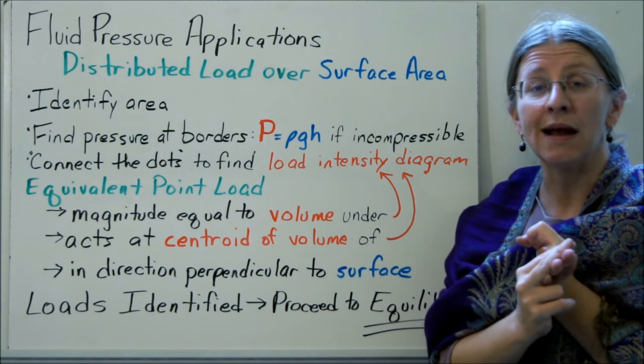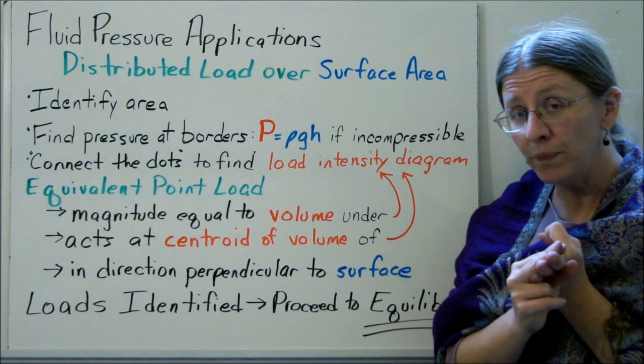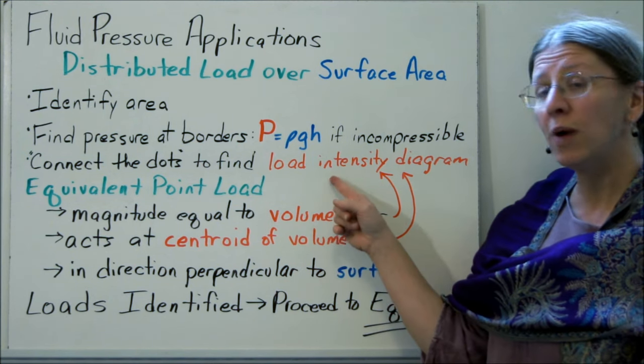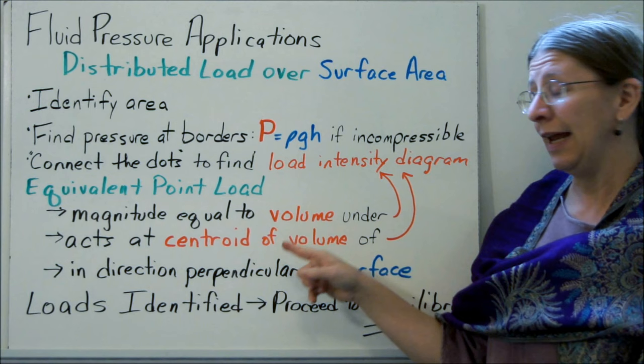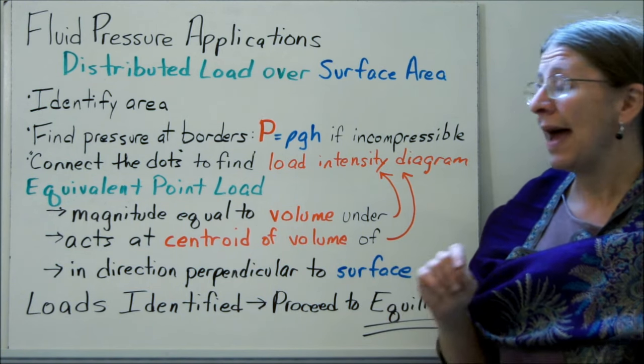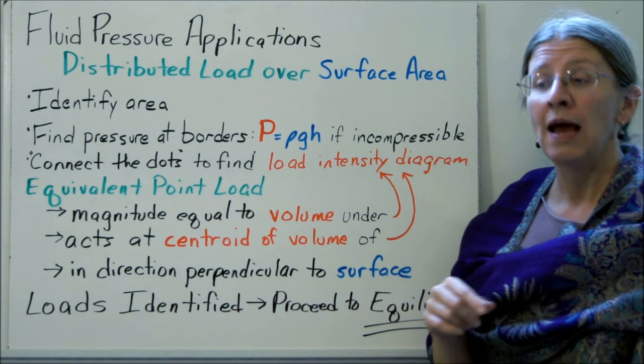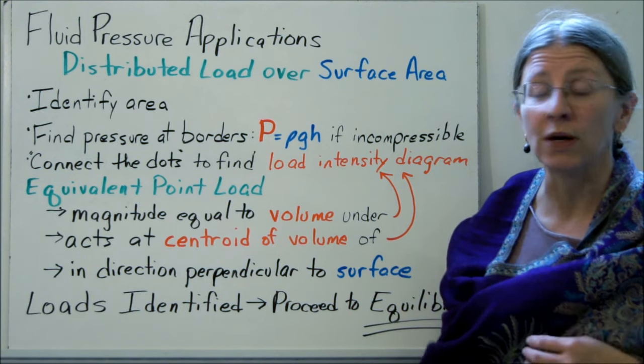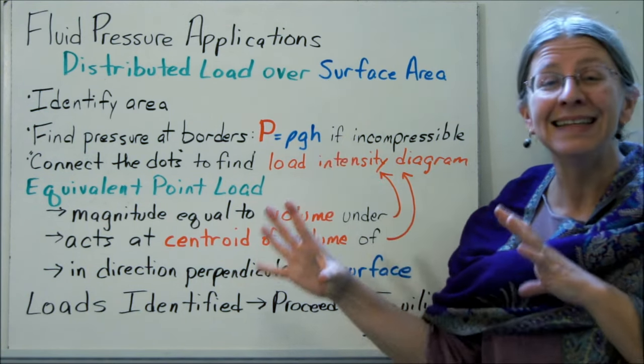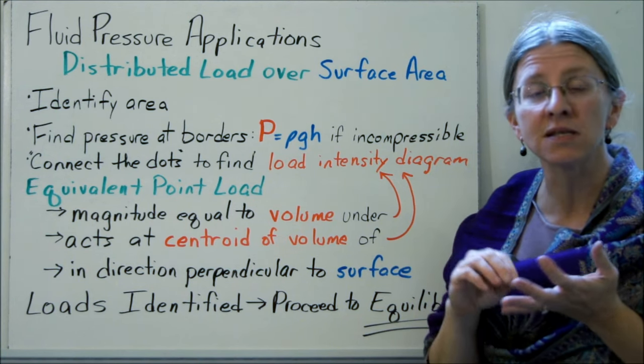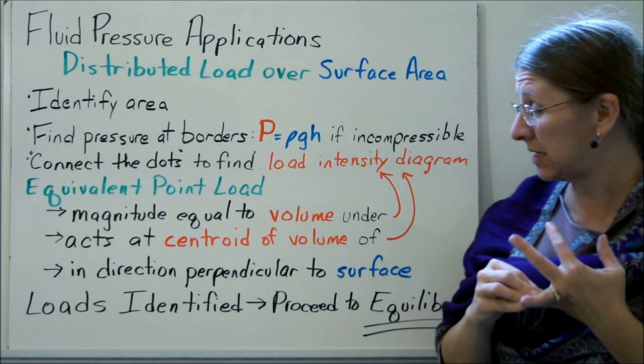Once you have that load intensity diagram, you can find the equivalent point load. The equivalent point load has magnitude equal to the volume under the load intensity diagram. It acts at the centroid of the volume and in a direction perpendicular to the surface area you started with. Bear in mind that this stuff leads into equilibrium. We're still going to have the sum of the forces and sum of the moments in our problems because we're still dealing with statics.